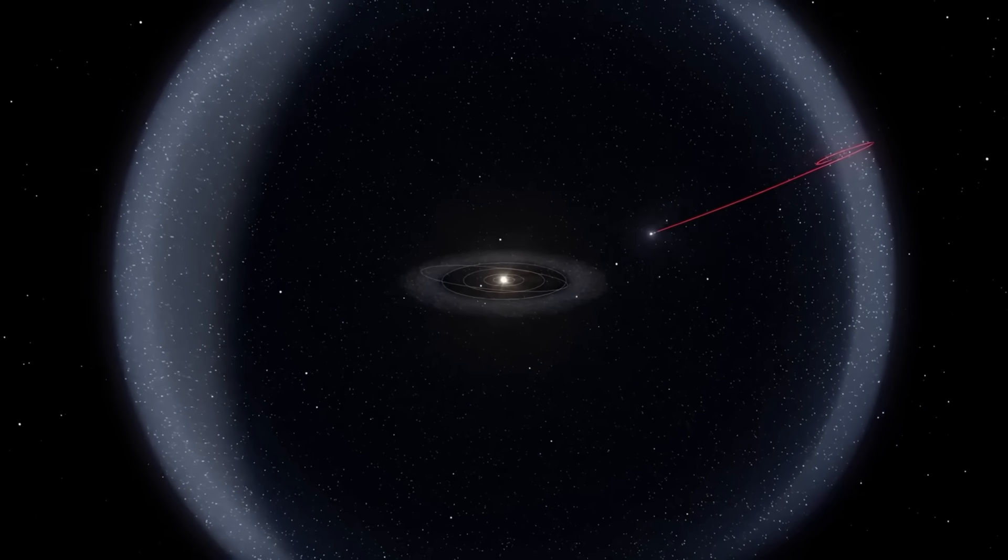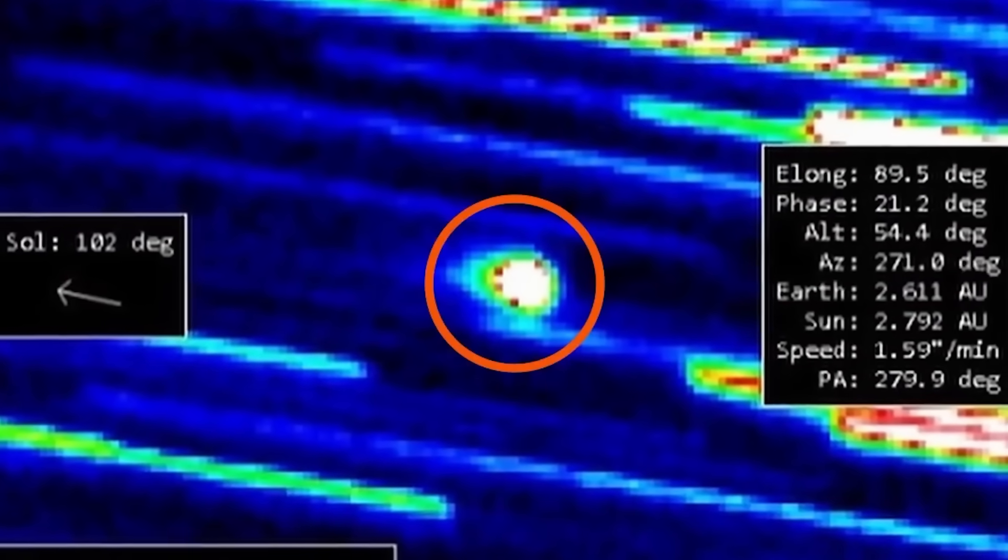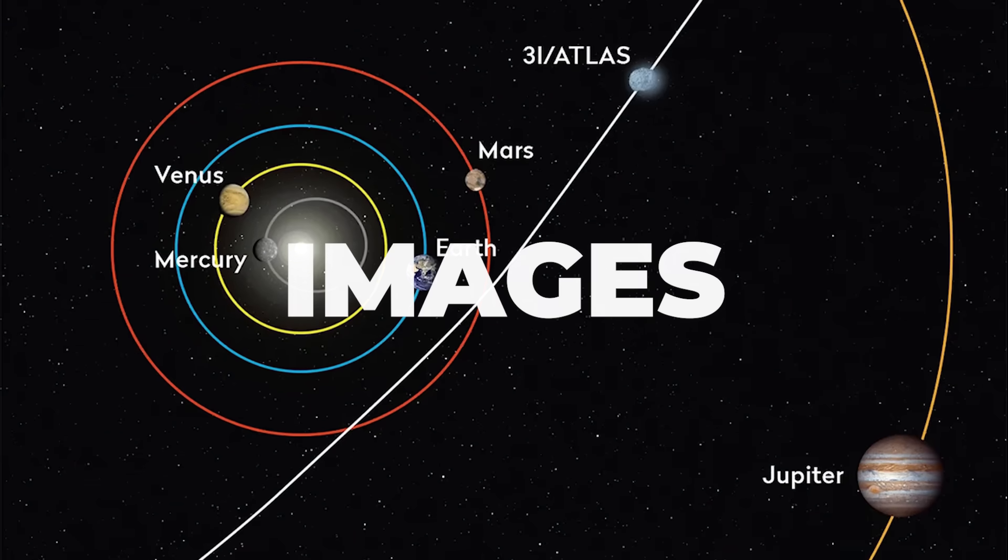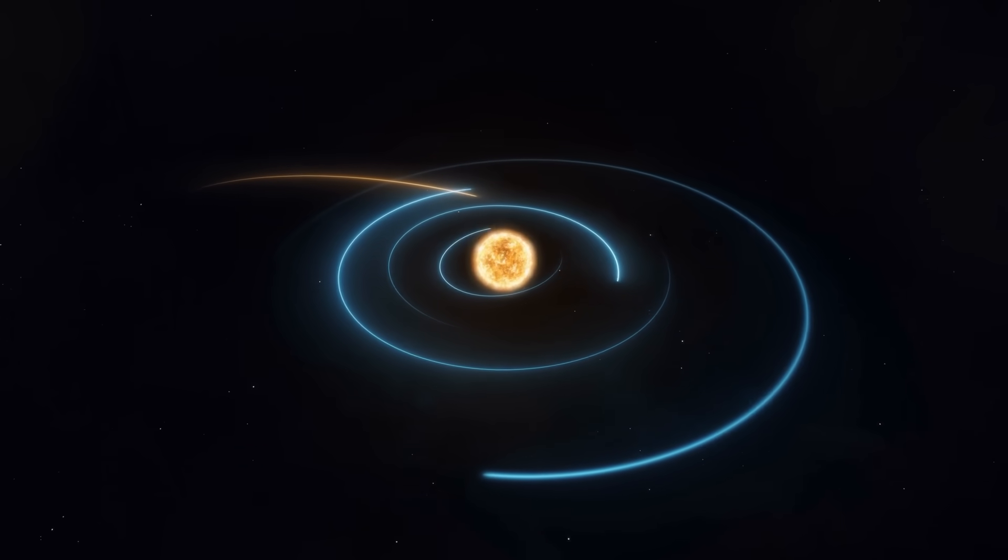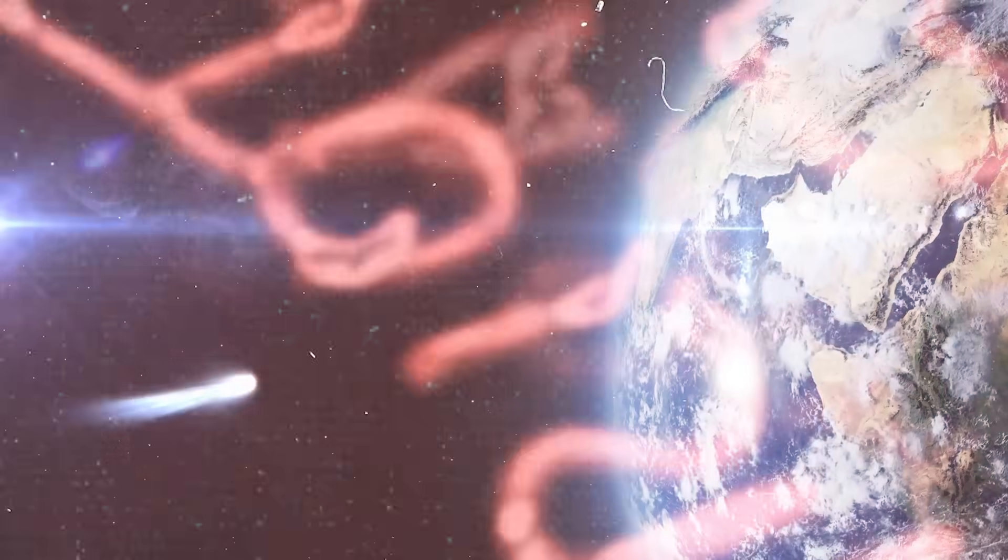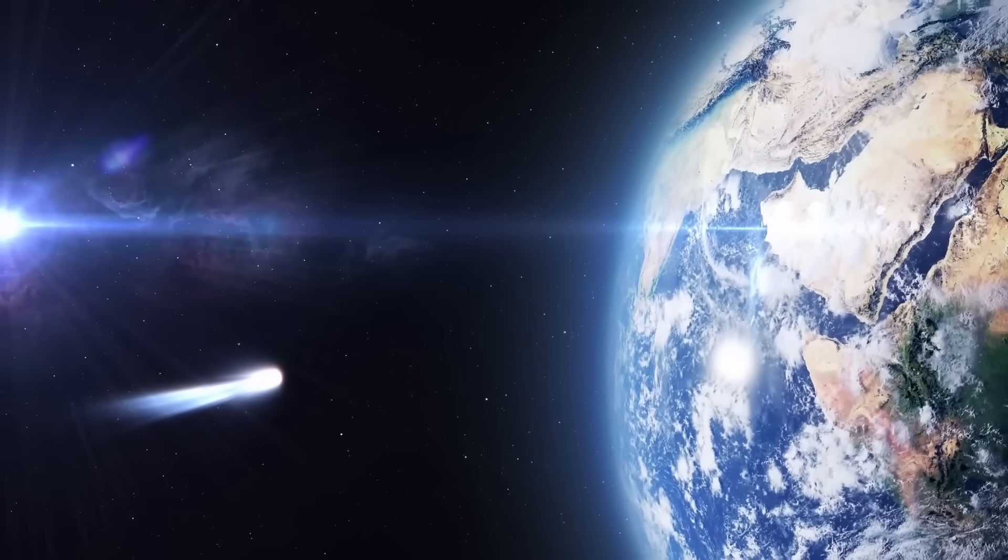NASA just dropped another alert about 3i Atlas, and I need you to remember this because it's easy to miss. This time, the first warning didn't come from the images, it came from the orbit. And that's where things get uncomfortable, because when a comet's orbit starts talking back, it usually means something on the nucleus changed before our eyes even catch up.